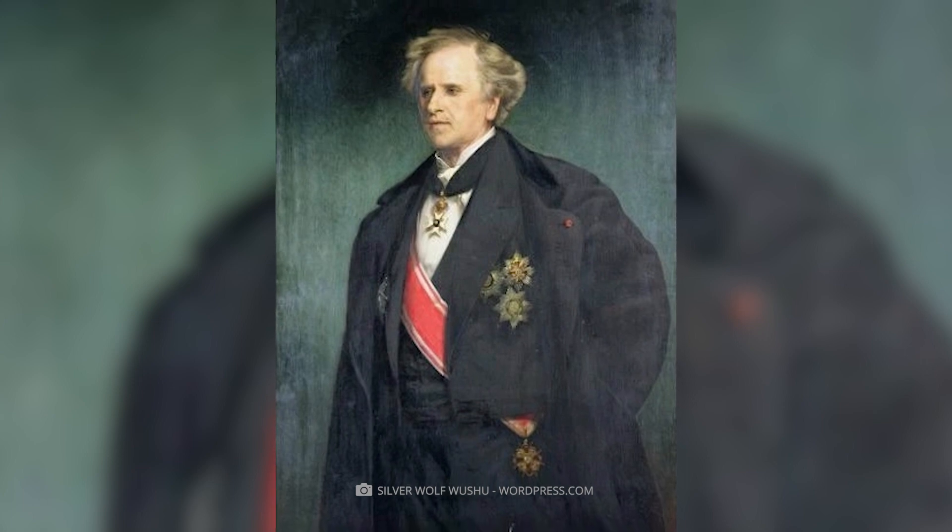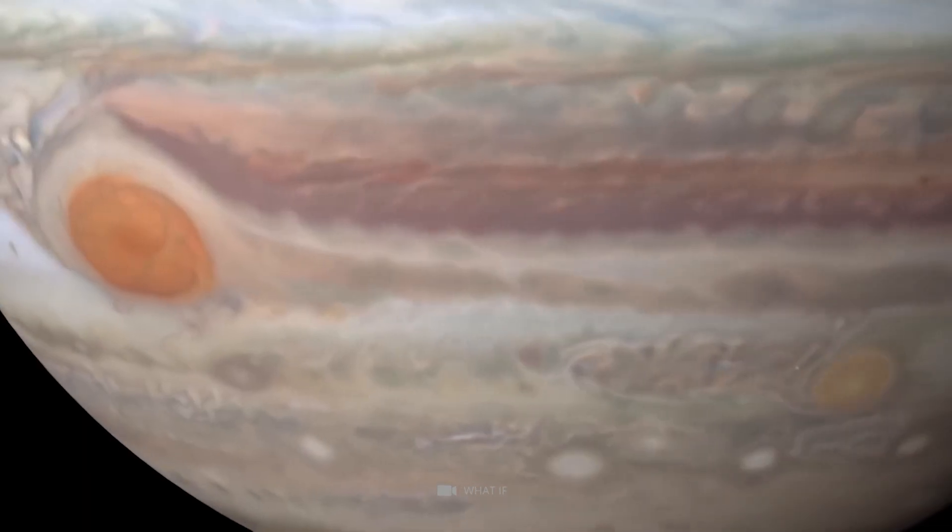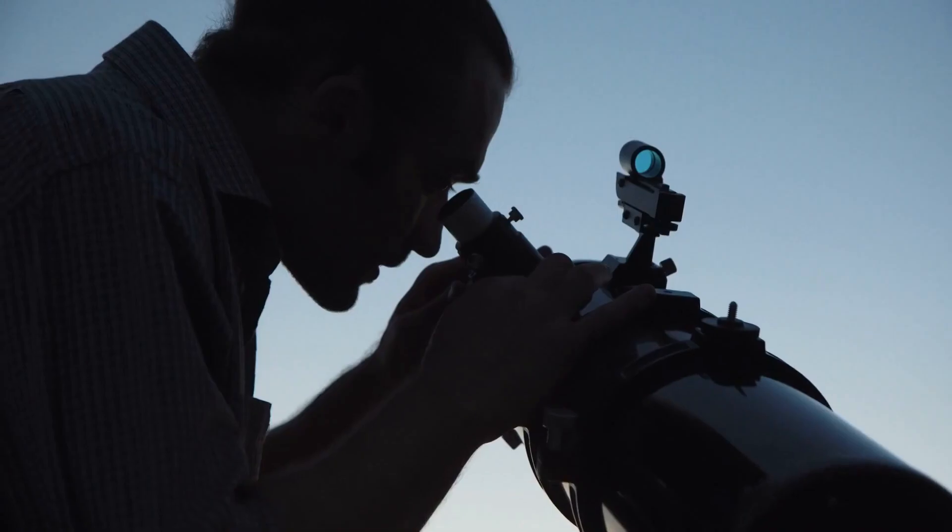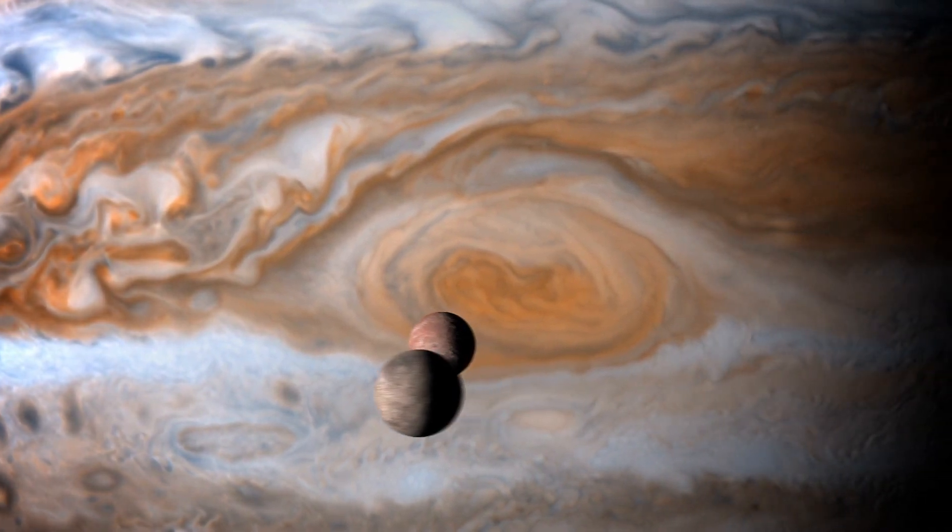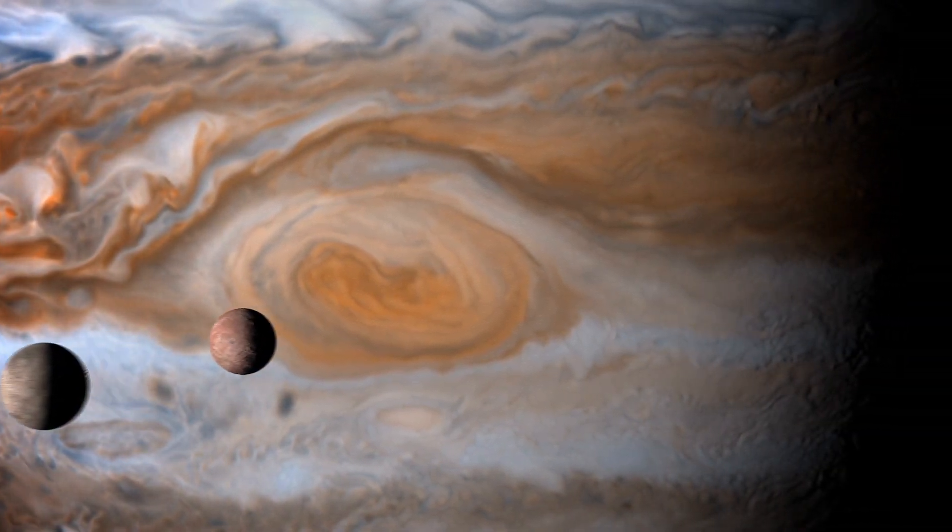It was named by the French astronomer Lavielle upon discovery due to the red hue of the storm when observed in small telescopes. It is estimated to have been around for at least 350 years, making it even more remarkable in duration and lifespan.